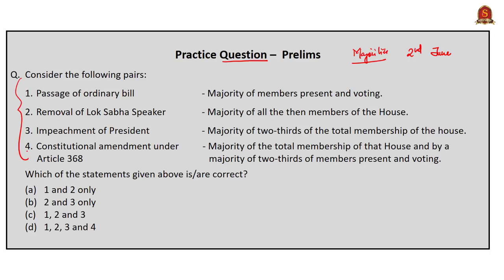Consider the following pairs. On the left side four conditions are given; on the right side we should see whether they are perfectly matched or not. The first one: passage of an ordinary bill. We all know that simple majority is required for passing an ordinary bill — that is majority of the members present and voting. There are 545 members in Lok Sabha. Assume only 350 came and 50 abstained, so only 300 are present and voting. We need half plus one, that is 151 votes, for the passage of an ordinary bill. So the first one is correctly matched.